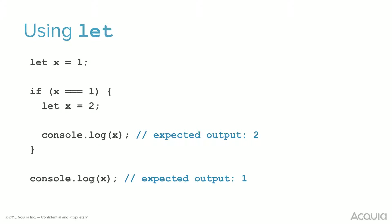Using let is a very good example of block scope. Let x equal to 1, and if x equals 1, let x equal to 2. If we console.log it inside and outside of the if statement, we get two different values — demonstrating that let is scoped to the block.